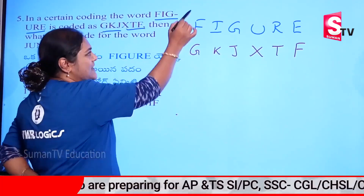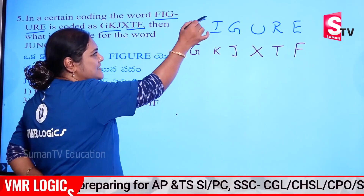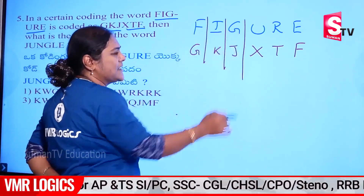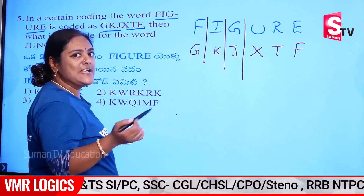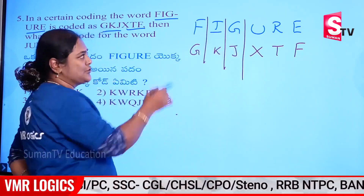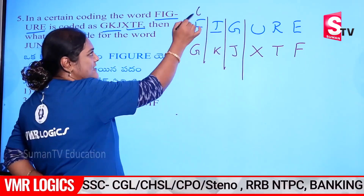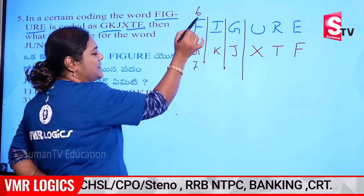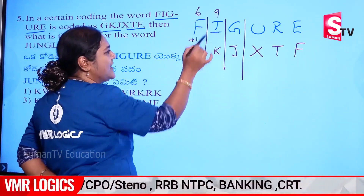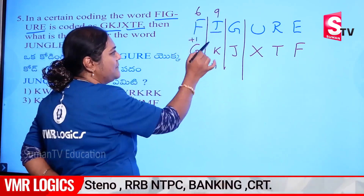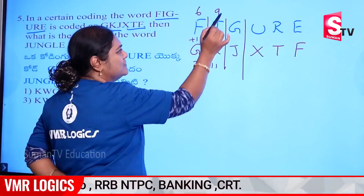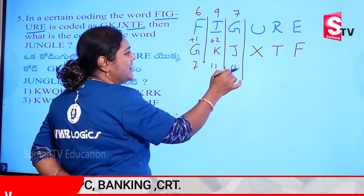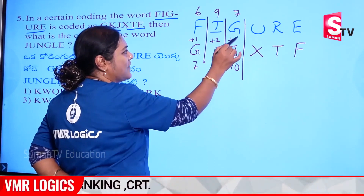Now, cut them. If opposites come, we can do it. Place values are cut. 6 and 7 — plus 1. 9 and 11 — plus 2. 7 and 10 — plus 3.